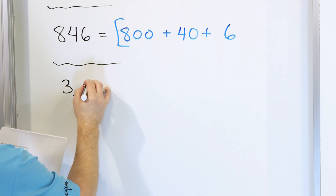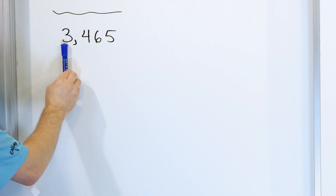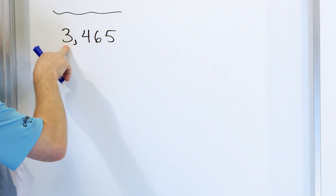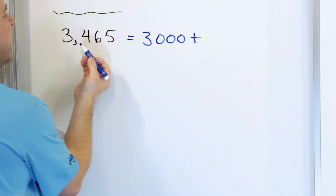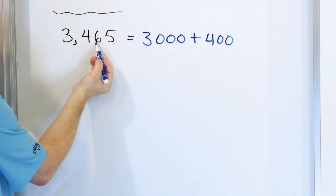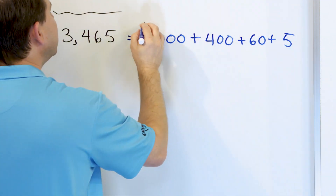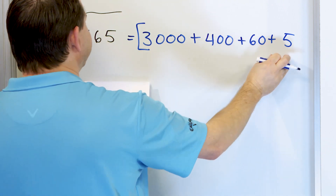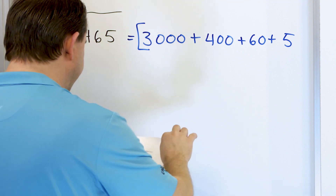What if we have the number 3,465? The 3 is in the thousands place — ones, tens, hundreds, thousands — so the value of this 3 is not really 3; the value is really 3,000 because it's in the thousands place. What's the value of the 4? It's in the hundreds place, so it's really worth 400. What's the value of the 6? It's in the tens place, so it's really worth 60. And the 5 is in the ones place, so it's just 5. So really when we write down 3,465, what we really mean is 3,000 plus 400 plus 60 plus 5. That's what we mean when we write down a number.